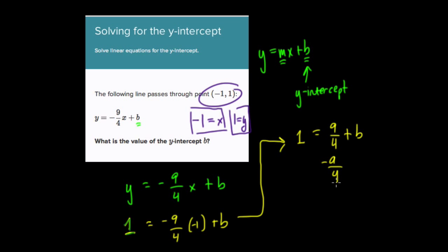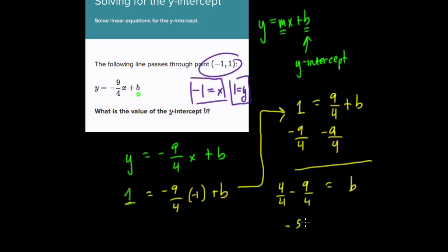Solve for b by subtracting 9 fourths from both sides. Now that means that b equals what? Well, 1 is like 4 over 4. And we take 9 over 4 away. That's negative 5 over 4. And that's the b value.